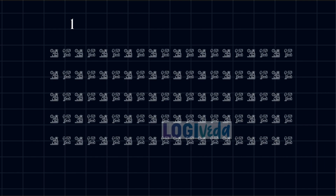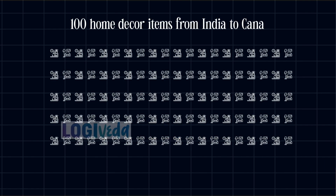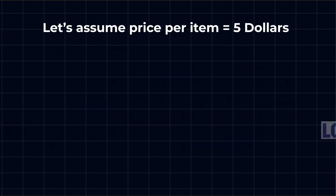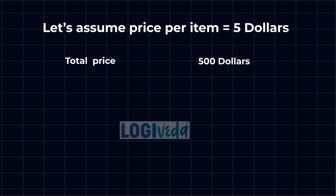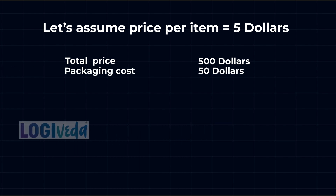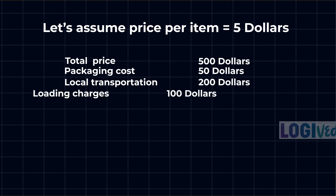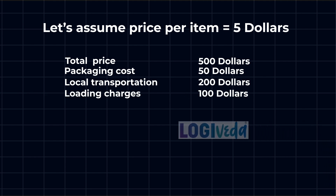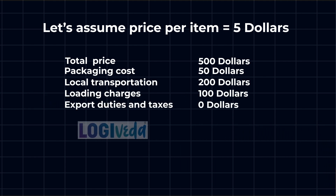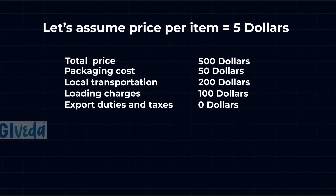Now let's go through a practical example to illustrate this. We are going to export 100 home decor items from India to Canada. The price per item is $5, and with 100 items the product cost is $500. Packaging cost is $50, local transportation $200, loading charges $100. Export duties and taxes — currently we are considering $0.